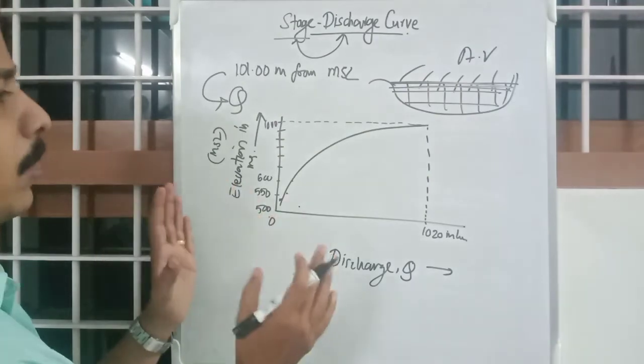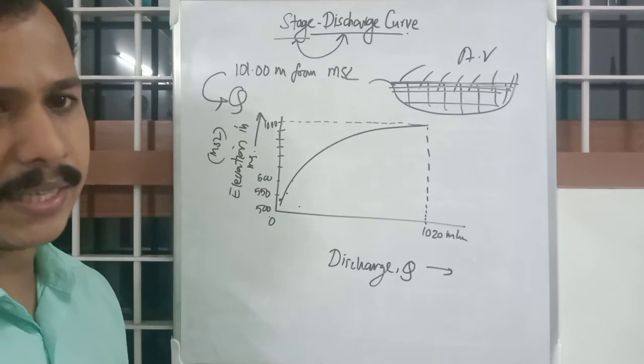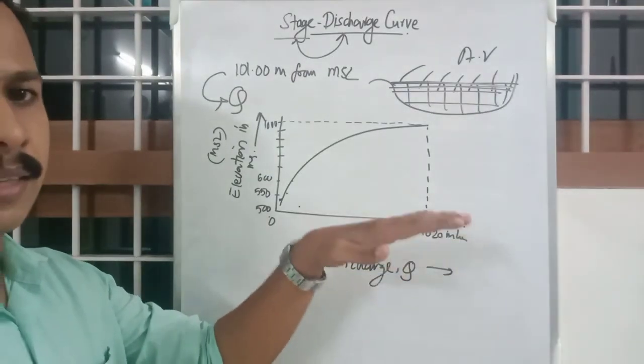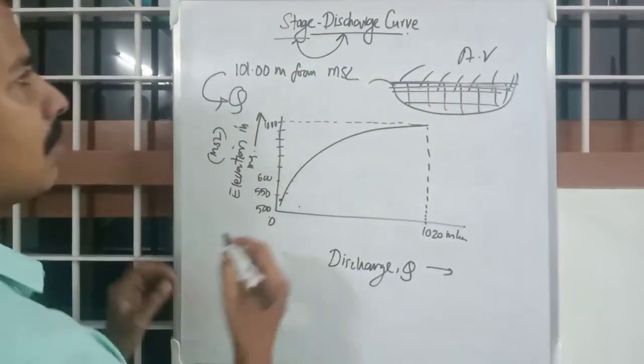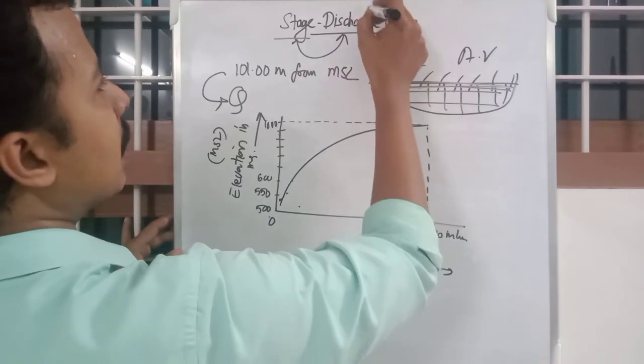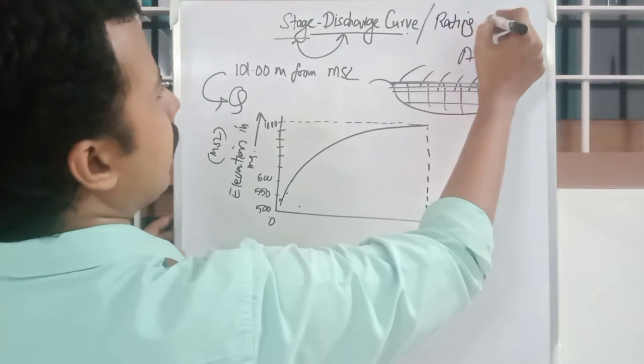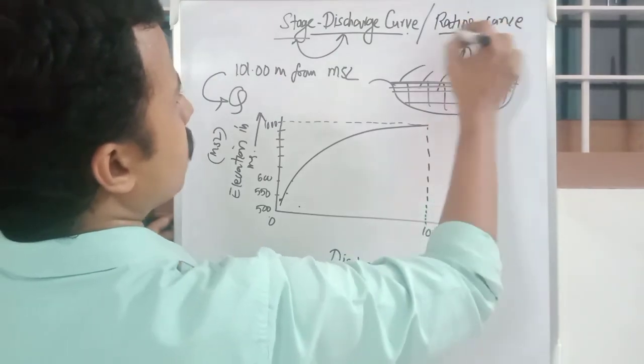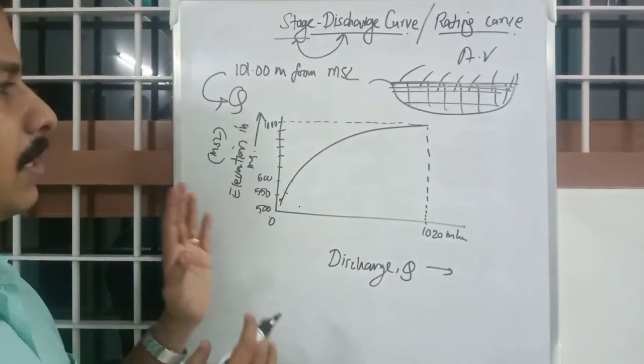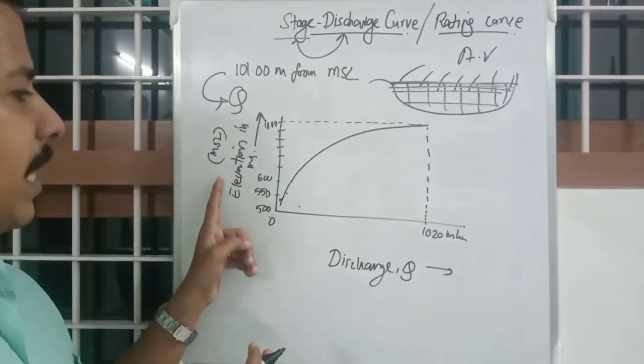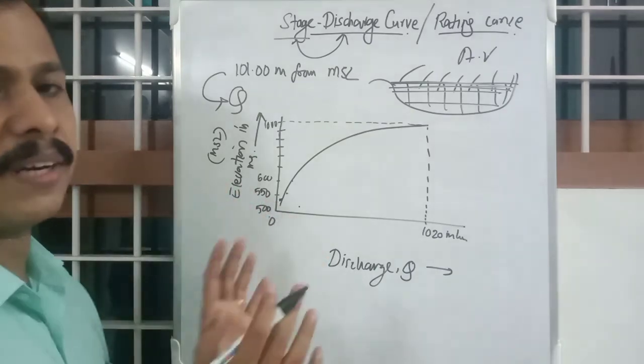So by this way we can get discharge from just stating the stage or the level of water level in the stream. So this stage discharge curve is also called as rating curve or simply rating curve. So rating curve is the curve plotted between stage and discharge of a particular stream and it will be different for different streams.